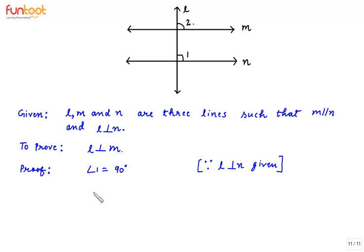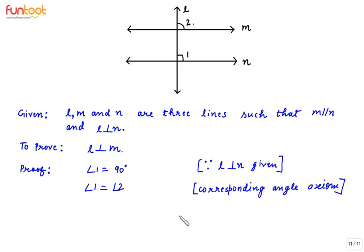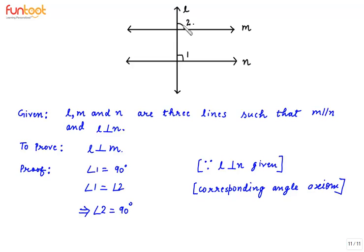Also, angle 1 equals angle 2, because M is parallel to N (given) and these two angles are corresponding angles — by the corresponding angle axiom. Since angle 1 equals 90 degrees and angle 1 equals angle 2, this implies that angle 2 is also equal to 90 degrees.